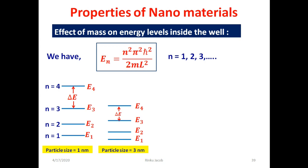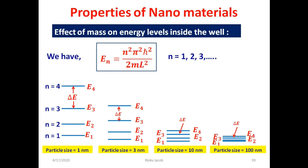As we increase the particle size to 3 nm, the separation between energy levels decreases. Increasing to 10 nm, separation decreases further. At 100 nm, energy levels are very close to each other. Finally, for a bulk material of size 1 cm, the energy levels are so close they appear as a continuous band of energy levels. This happens because energy levels from a large number of smaller particles constituting the bulk material coincide — forming what we call an energy band, which can be a valence or conduction band.